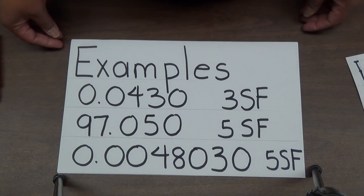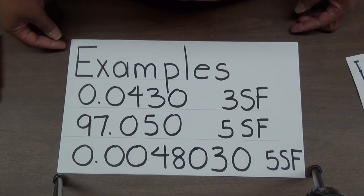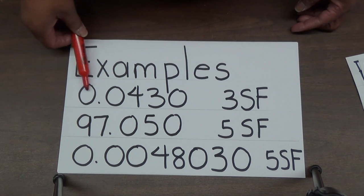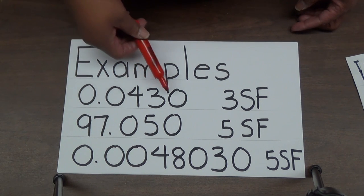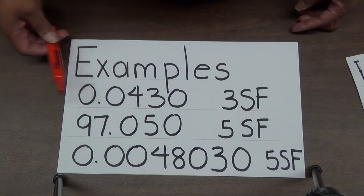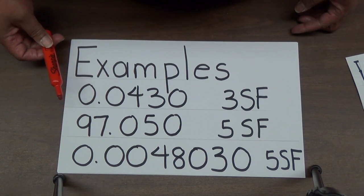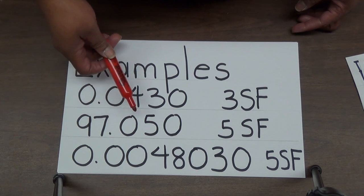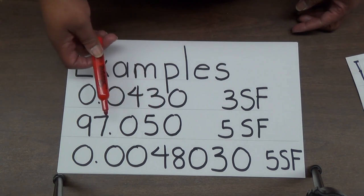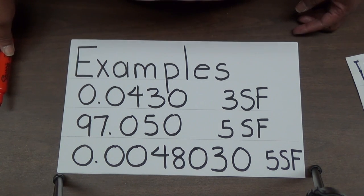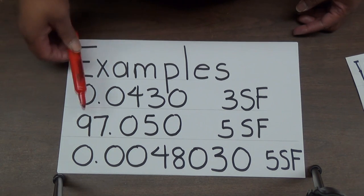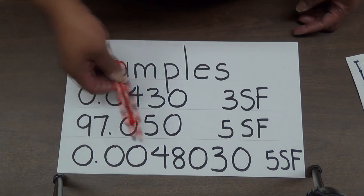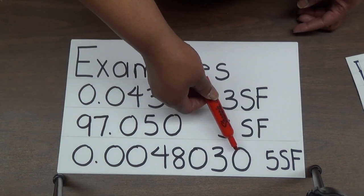More examples combining the different rules. 0.0430 has three significant figures — zeros at the beginning are never significant, and the zero at the end is significant because there is a visible decimal. 97.050 has five significant figures — the middle zero is trapped between two nonzero digits, and the trailing zero is significant due to the visible decimal. 0.0048030 has five significant figures — the three zeros at the beginning are not significant, the zero in the middle is trapped, and the trailing zero is significant because a decimal is present.